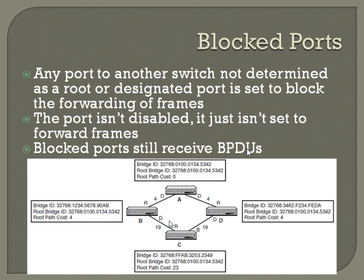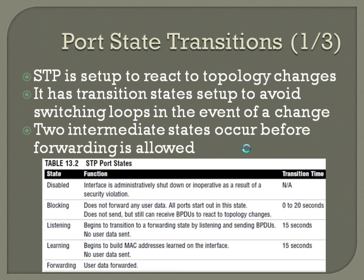Port state transitions: STP is set to react to topology changes if they occur. It has transition states set up to avoid switching loops in the event of a change. Two intermediate states occur before forwarding is allowed.